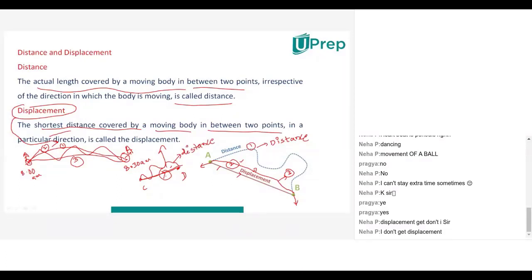If an object is moving in a curved way, you cannot say it has displacement — you have to say it has distance. For distance, it will not be the shortest one. The shortest one only will be called displacement, and other than that, all will be called distance. The actual length covered by a moving body between two points irrespective of direction is called distance, and the shortest distance in a particular direction is called displacement.